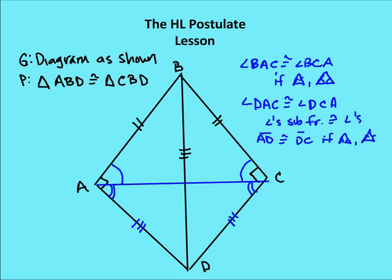I have the diagram as shown. I want to prove that triangle ABD is congruent to CBD. What I'm going to do is draw an auxiliary line from A to C. The first thing I'm going to say is that angle BAC is congruent to angle BCA, because I have sides that are congruent and the corresponding angles are also congruent.